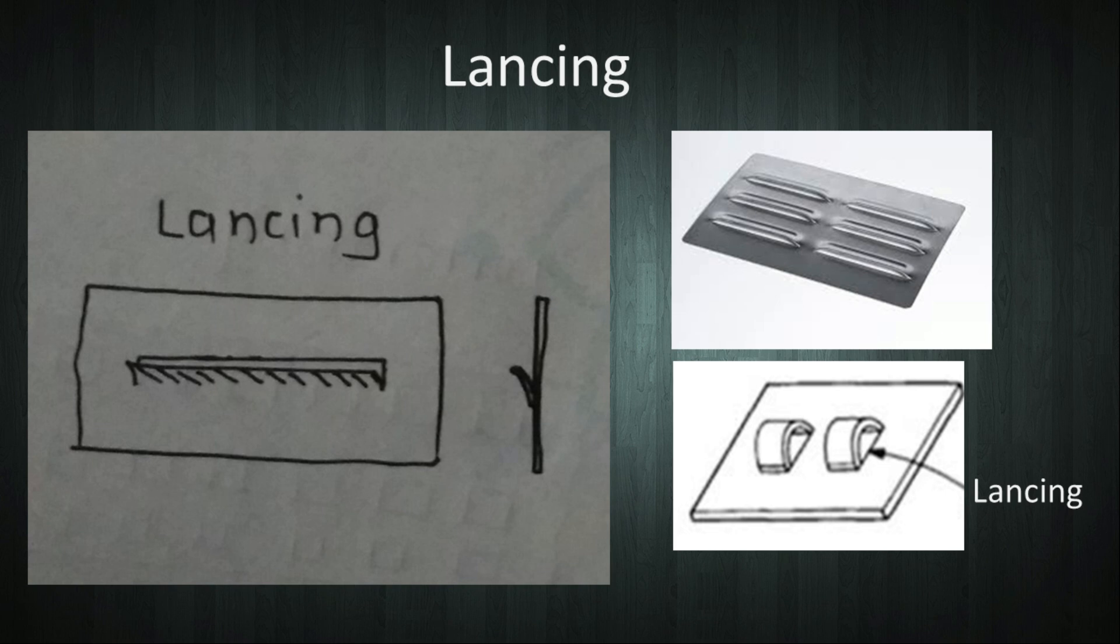The next operation is lancing. In this operation, the sheet metal is not cut apart, but a cut of small length is produced through it and it is bent to make an opening through the sheet. The lancing operation can be seen in the slide.